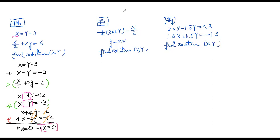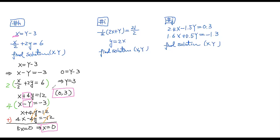After getting x equals zero, I substitute it into the first equation. So zero equals y minus 3, which means y equals 3. My solution is (0, 3). That's simplified compared to substitution, where you'd have to deal with (y minus 3) over 2 plus 2y equals 6, which is messier and more prone to careless mistakes.